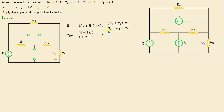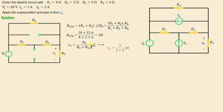In order to calculate the voltage V1 across resistor R3, we apply the voltage division rule. That means V1 = R3 / (R3 + R124) × Vs. Replacing R3, R124, and Vs with their numerical values, we obtain V1 = 10 volts.